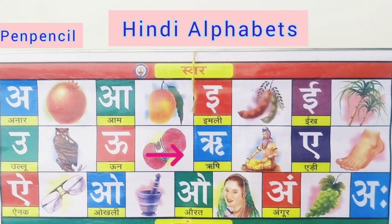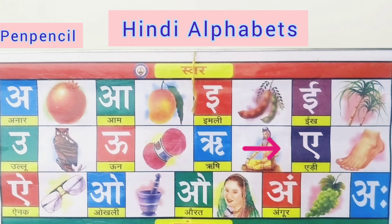Roo say rushi — sage. Roo say rushi — sage. A say ad — heel. A say ad — heel.